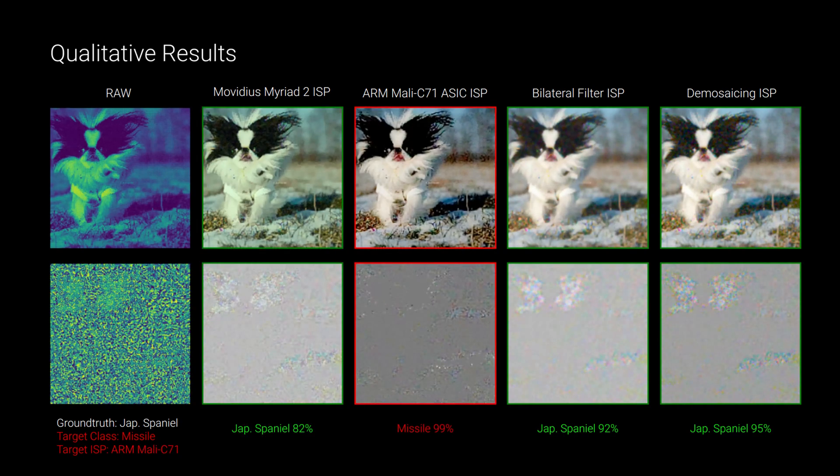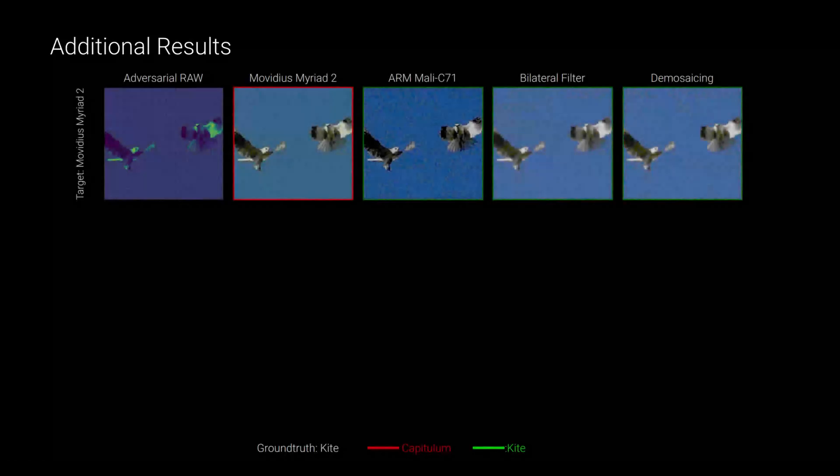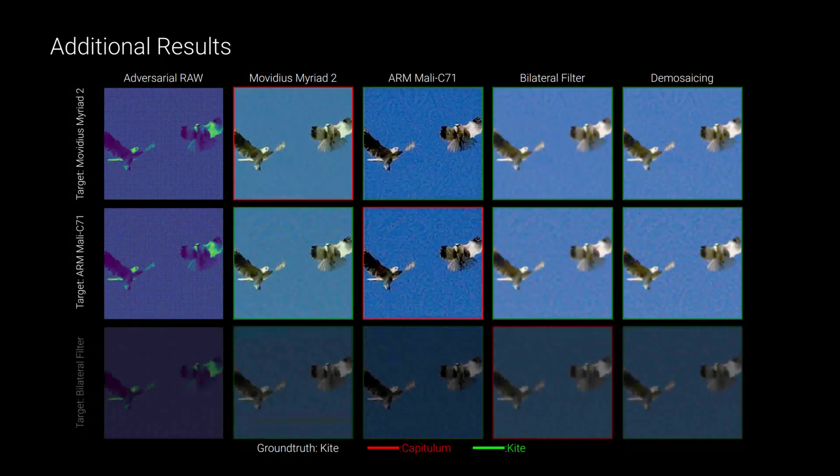Here's the attack that targets the ARM Mali ISP and this one for the bilateral filter ISP. Here's another set of examples where each row shows an attack on a specific ISP.